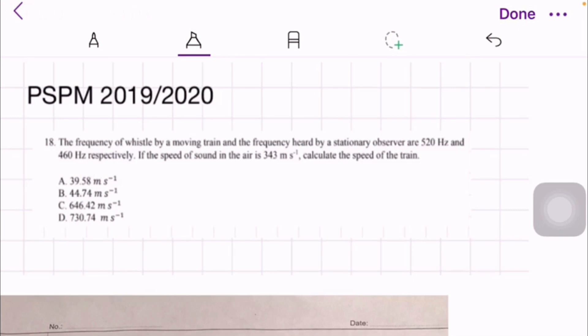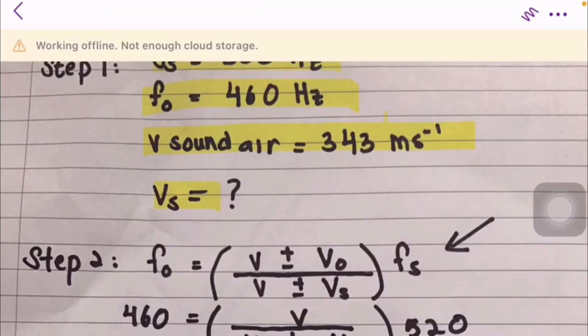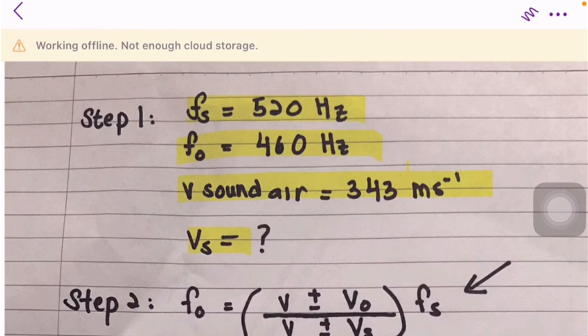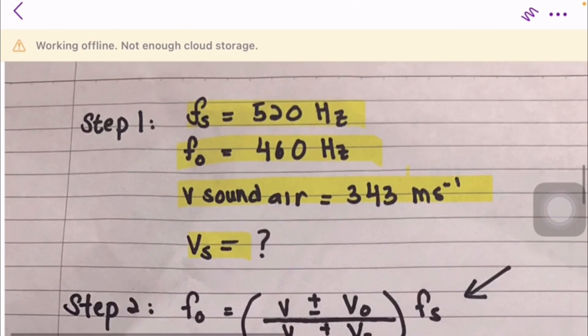So basically this question gives the frequency of whistle by a moving train and frequency heard by a stationary observer, which is 520 and 460 hertz. Step one, we list the information: fs is 520 hertz, fo is 460 hertz, v sound air is 343 meters per second, and vs is unknown.